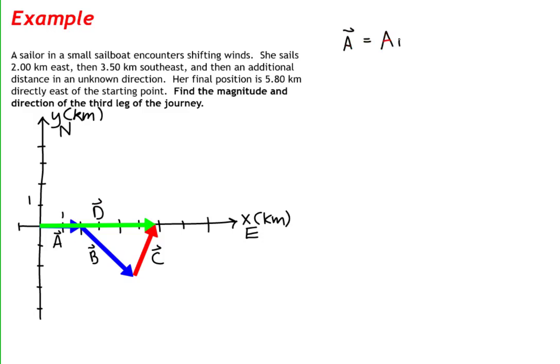The first leg of the journey is a vector. A vector is equal to a i-hat, where a is the magnitude of vector a, given as two kilometers.